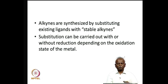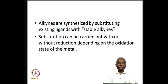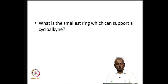To summarize: alkynes can be synthesized by substituting existing ligands. They can be pi acceptors or pi donors. We saw instances where halides were replaced by acetylenes, and it is also possible to replace carbon monoxide with acetylenes. Substitutions can be carried out with or without reduction, and depending on the oxidation state of the metal, it is often preferred to reduce it to a lower oxidation state using a suitable reducing agent.